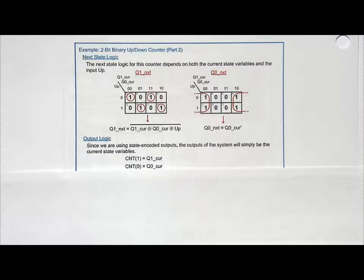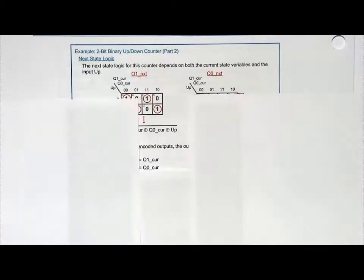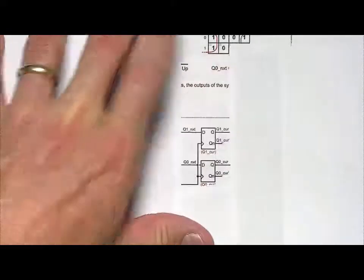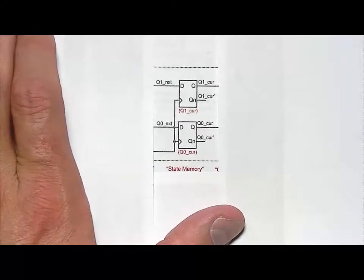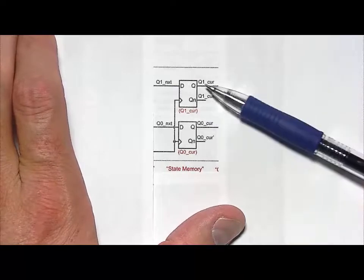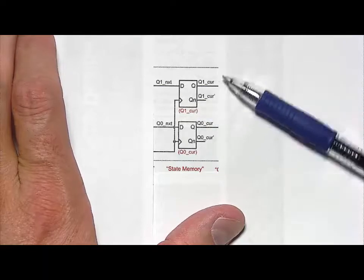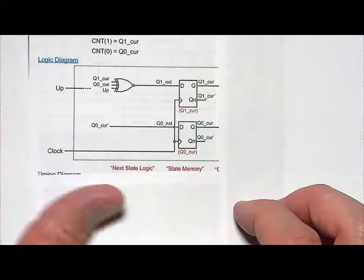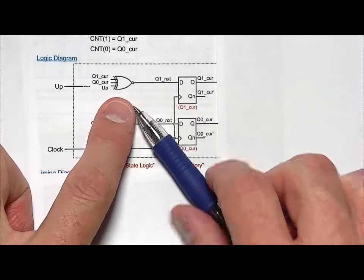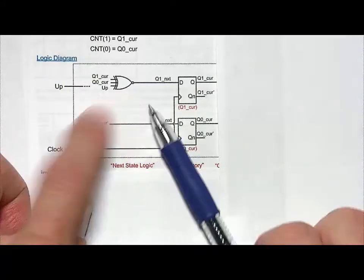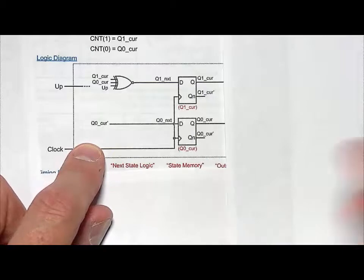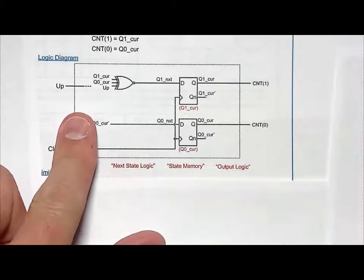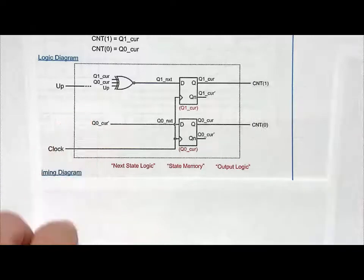Let's go ahead and look at the logic diagram. Starting with the state memory, I have two D flip-flops — one for q1 and one for q0. For the next state logic, I used an XNOR gate combining q1_cur, q0_cur, and up to produce q1_next. Then q0_next is simply q0_cur complement, taken from the inverted output of the q0 flip-flop. The output logic is nothing more than wires, since I chose state codes to match the desired outputs.